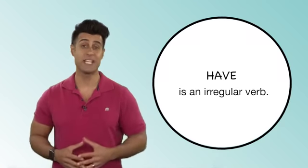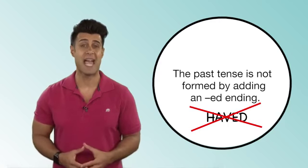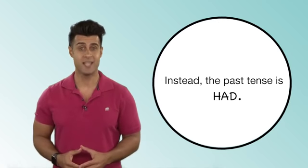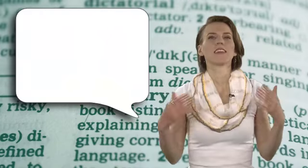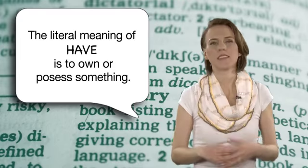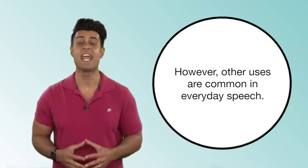Have is an irregular verb. The past tense is not formed by adding an ED ending. Instead, the past tense is had. The literal meaning of have is to own or possess something. However, other uses are common in everyday speech.